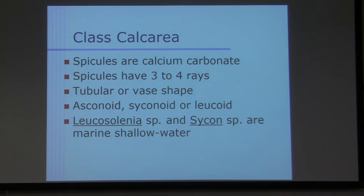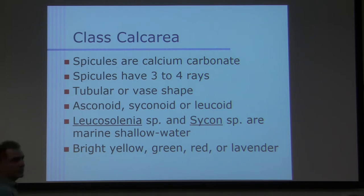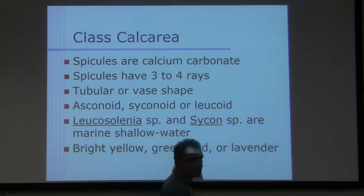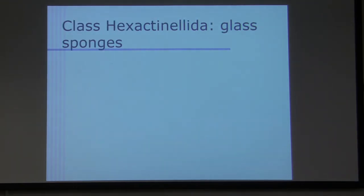So they are found in marine and shallow water areas. And bright yellow, green, red, lavender, they can be very colorful. Not the ones we have in the lab, but they can be very nice type of color, bright yellow.